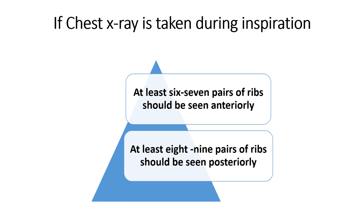Is the X-ray taken during inspiration? To comment on the lung, the X-ray should be taken during inspiration. We tell the patient to hold the breath for at least a few seconds while the X-ray is taken — though this is again not always possible in pediatric patients. When taken during inspiration, at least 6–7 pairs of ribs should be seen anteriorly and at least 8–9 pairs posteriorly. Whenever the lung shadow is visible up to the 7th pair of ribs, the X-ray is taken during inspiration. If expansion is more than 7 pairs of ribs, we label it as a hyperinflated lung field.